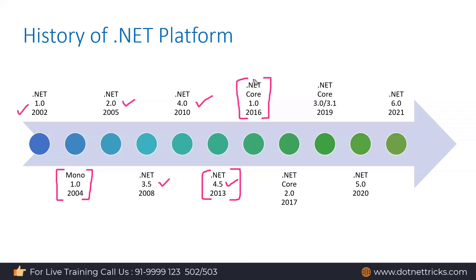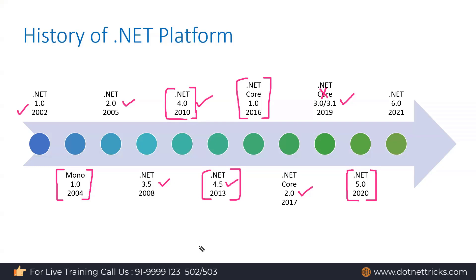Looking at the version history: .NET Core 1.0, then 2.0, then 3.x, then 3.1 — and after 3.1, there is no .NET Core 4.0. They're also dropping the word 'Core' because it gave the impression it was only for basic applications, not enterprise-grade ones. They released .NET 5, skipping 4.0 entirely to avoid confusion with the existing .NET Framework 4.0.